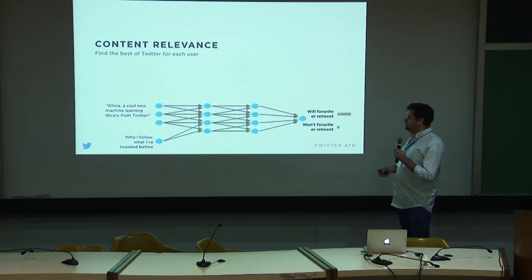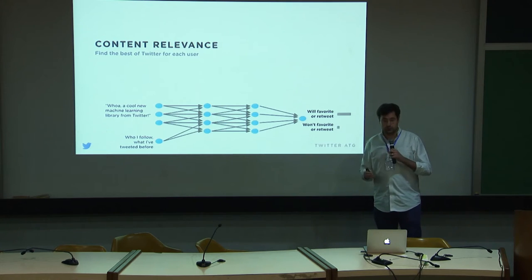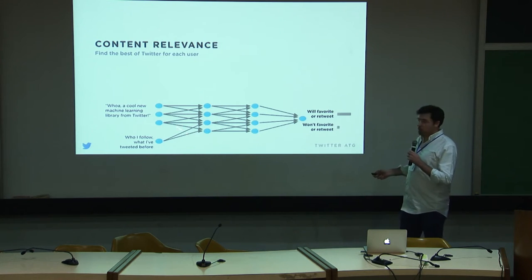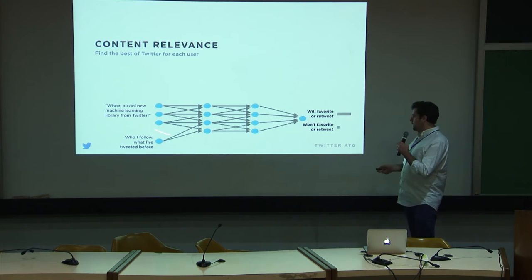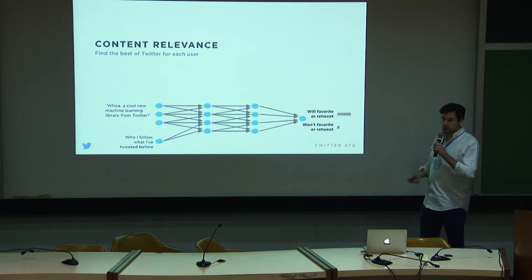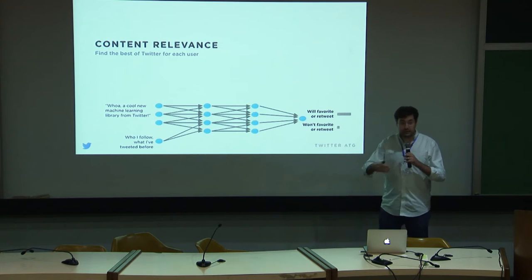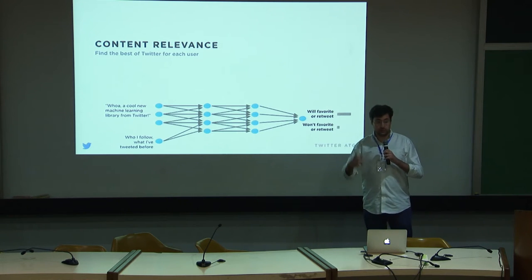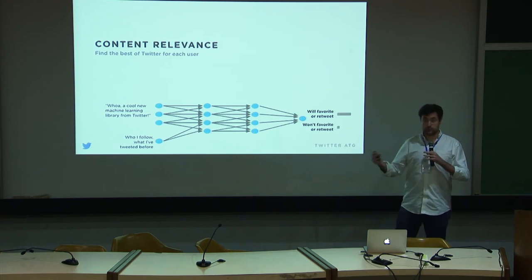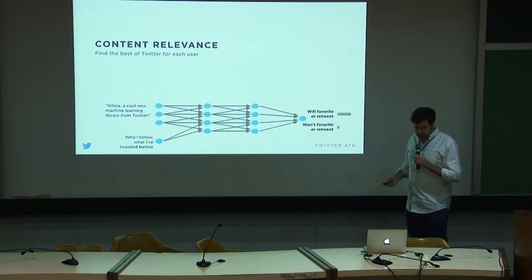Another aspect we tackle is content relevance. Given some text we might show you and given who you are — what you follow and what you've tweeted before — we try to take all that information and decide whether you're going to like it. Engaging with content, like liking, favoriting, or retweeting, is a proxy for whether you like something. We're trying to predict this on an immense amount of text.